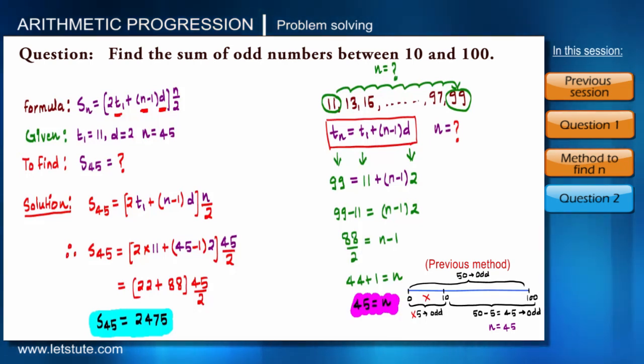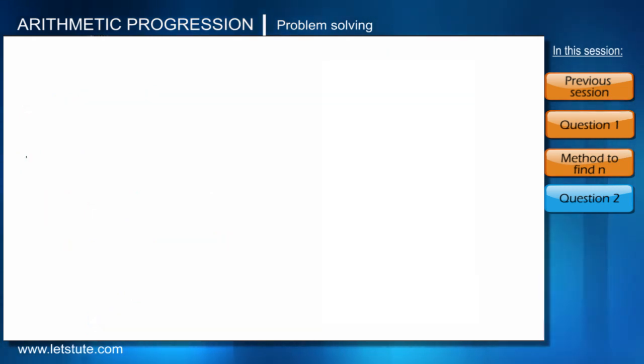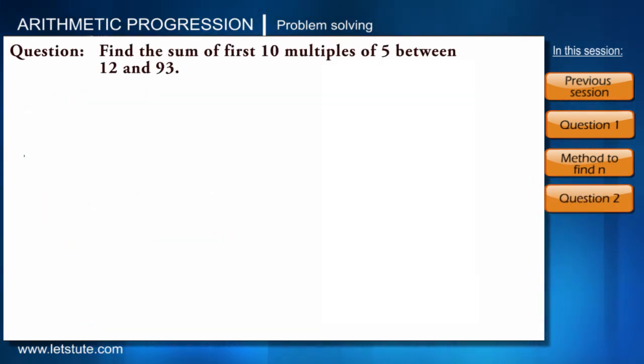Okay, so let's go ahead and try some more questions. This question says: find the sum of 10 multiples of 5 between 12 and 93. Now this time you should tell me what is given and what to be found.